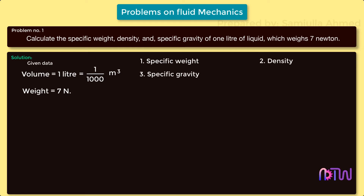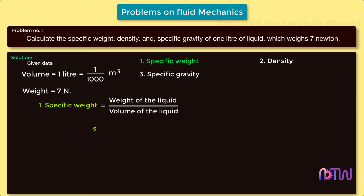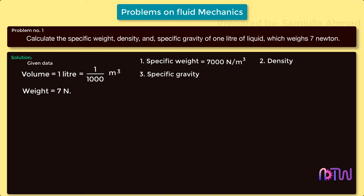First, specific weight of the fluid equals weight of the liquid divided by volume of the liquid. Therefore, specific weight equals seven newtons divided by 1/1000 cubic meters, which can be rewritten as seven into one thousand newton per meter cube, equal to 7000 newton per meter cube.